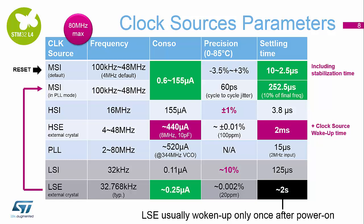The stabilization time of the PLL once started is about 15 microseconds. So if you want to use any clock source up to the maximum 80 megahertz, you first have to calculate the time for that clock source to stabilize, then add the 15 microsecond stabilization time of the PLL on top. Then we have two low speed clocks. The LSI is the low speed internal RC running at 32 kilohertz. It's not the most accurate — approximately 10% tolerance — and startup time is 125 microseconds, but it is one of the lowest current consumption clocks available on the device.